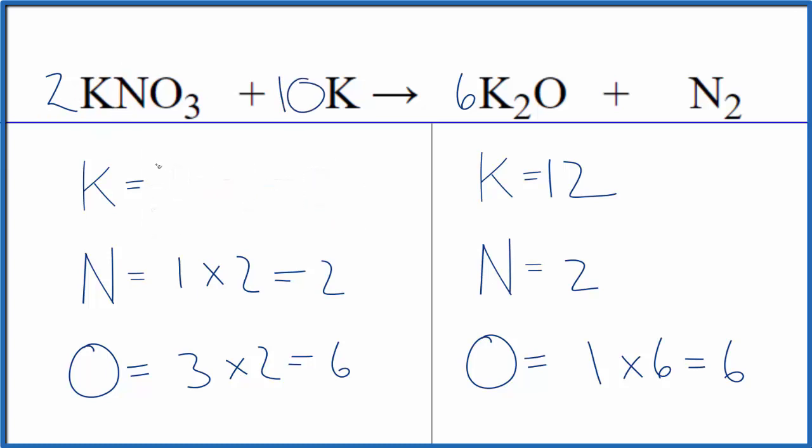One times two for the potassium atoms, we have those, and then we have the ten. We just put that there. One times ten, that gives us ten. So we have twelve potassium atoms. This equation is balanced.